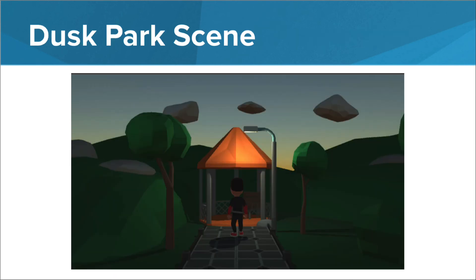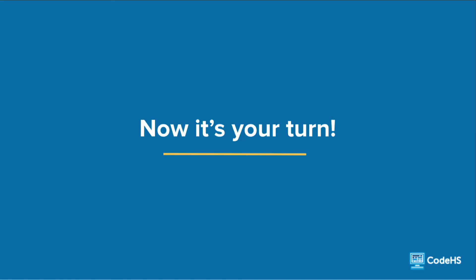You'll continue practicing with Unity in our park game environment by using various lighting techniques to create a dusk or evening scene. Now that you know a little more about different scene lights available to use in Unity, it's your turn to light up our park game environment at dusk.